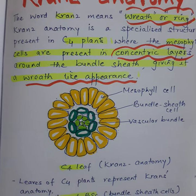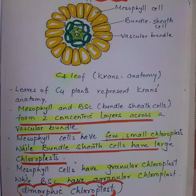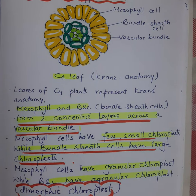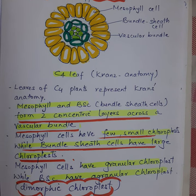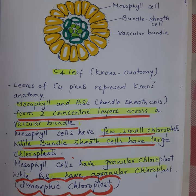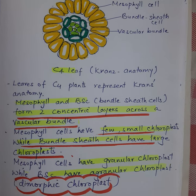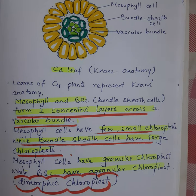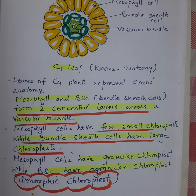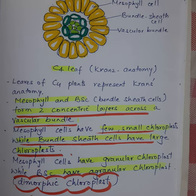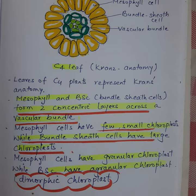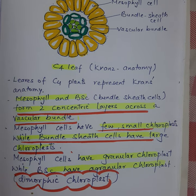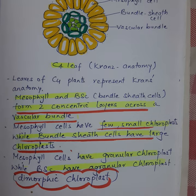Kranz anatomy is present in the leaves of C4 plants, where mesophyll and bundle sheath cells form two concentric layers around the vascular bundle. Mesophyll cells have few or small chloroplasts, while bundle sheath cells have large chloroplasts.